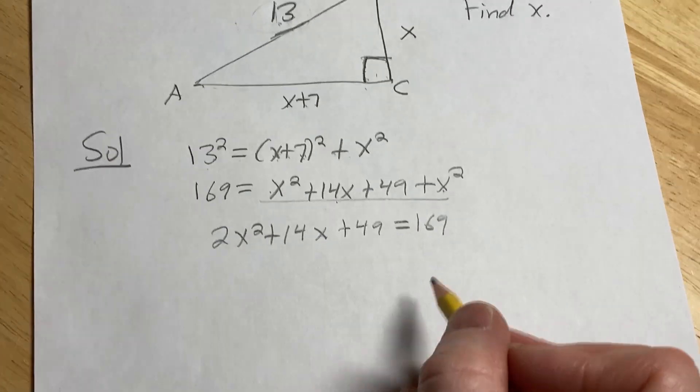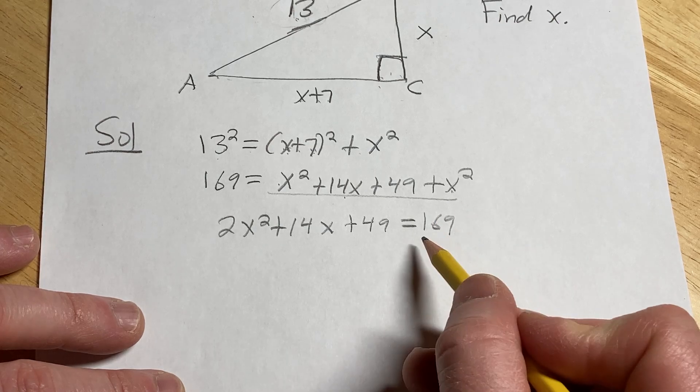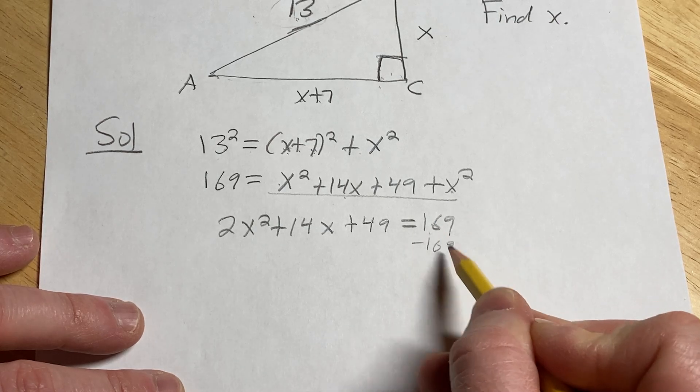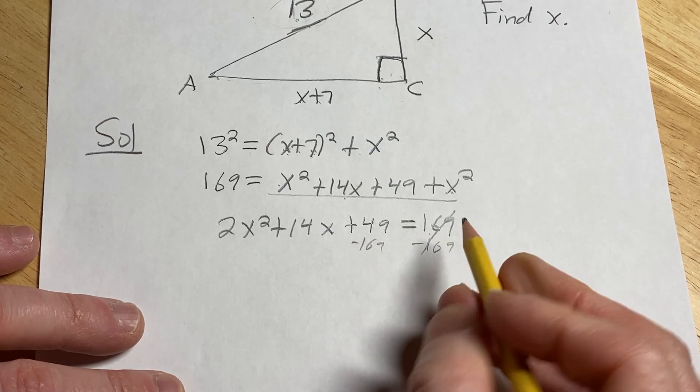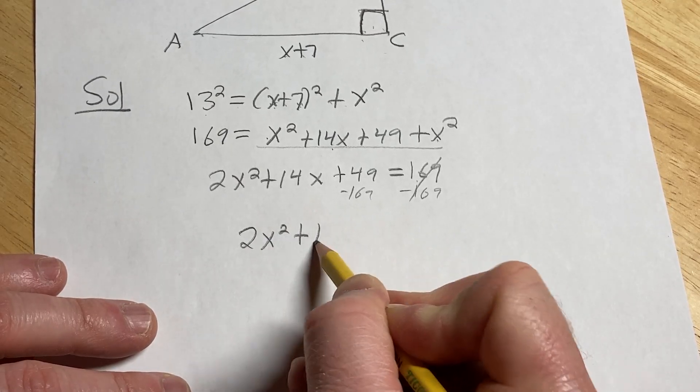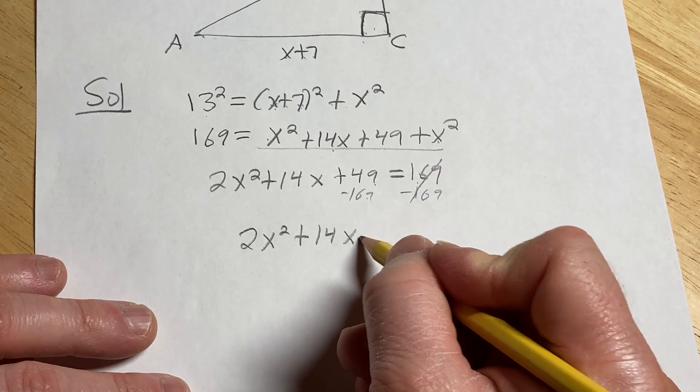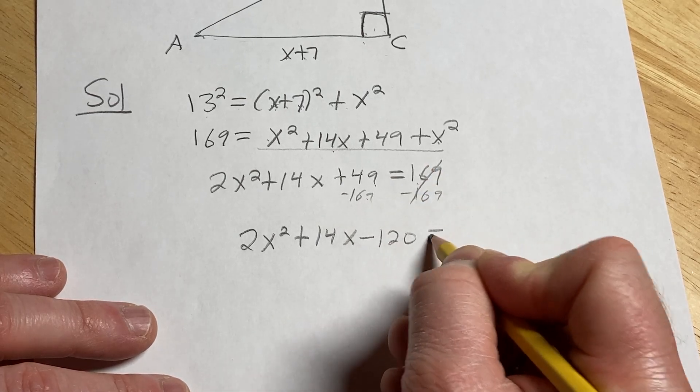The goal is to solve this equation, and because it's a quadratic equation, we want to set equal to zero. So if we subtract 169 from both sides, these go away, so we get 2x squared plus 14x, 49 minus 169 is minus 120, and that's equal to zero.